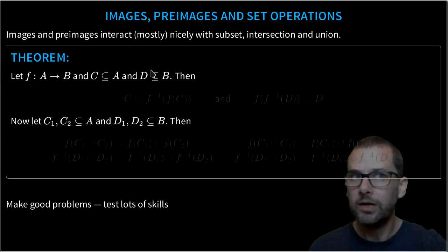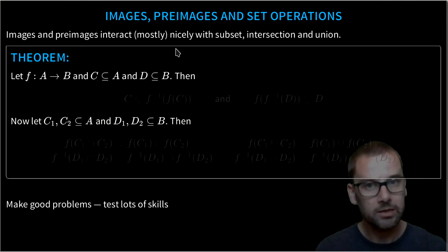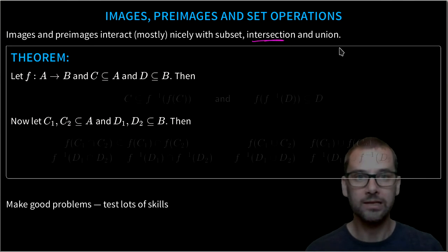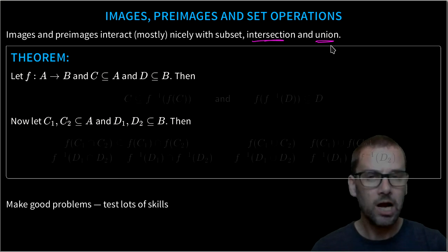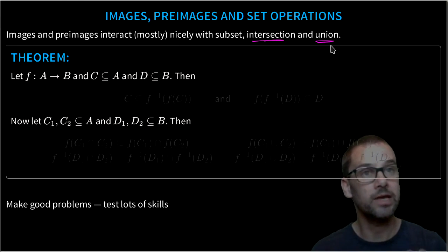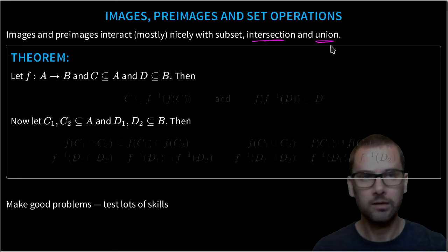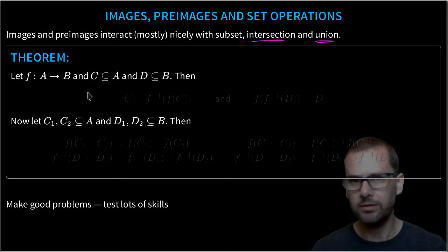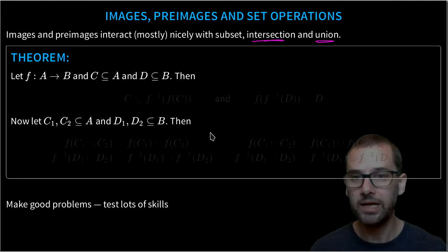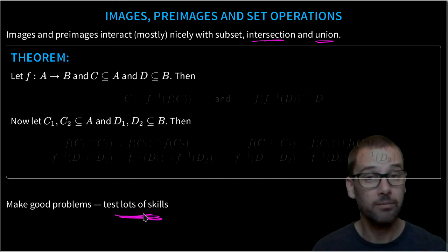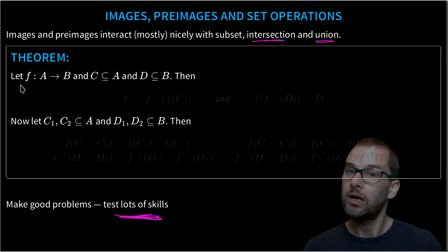We can ask more interesting questions about how images and pre-images interact not just with subsets, but with intersection and union. Because a function is an operation on sets defined in terms of sets, we should ask how it interacts with union, intersection, subset, and set difference. We can prove some nice theorems about this. These theorems test a lot of skills and require us to understand sets, functions, and basic proving skills.